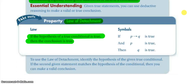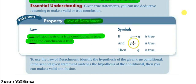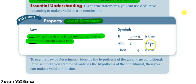This really goes back to our if-then statements. We have: if the hypothesis is true, then the conclusion is true. So what we're saying is if P then Q. We break it up to say P is true, then Q has to be true.